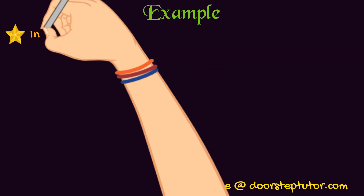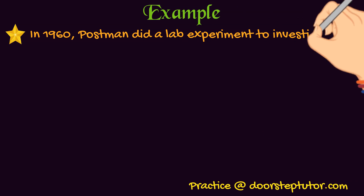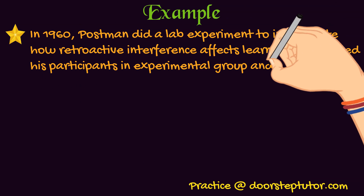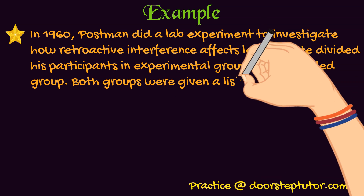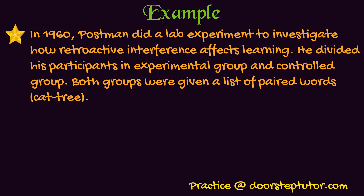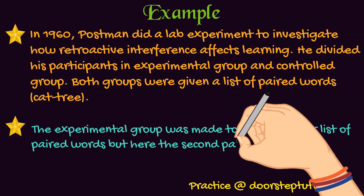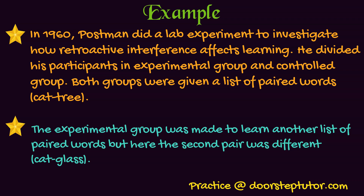To explain the role of interference in forgetting, Postman conducted a lab experiment in 1960 to investigate whether retroactive interference affects learning. He divided participants into two groups: an experimental group and a control group. Both groups were asked to remember a list of paired words, such as cat-tree and book-tractor. However, the experimental group was given an additional list of paired words in which the second word of each pair was changed — for example, cat-tree was changed to cat-class — and the experimental group had to learn both lists.